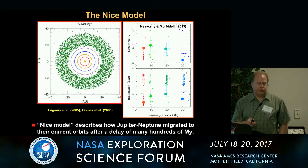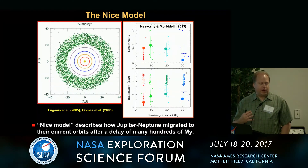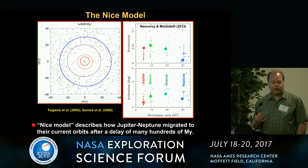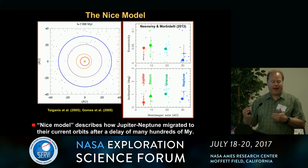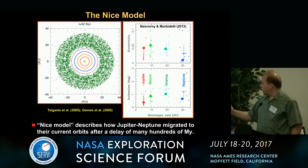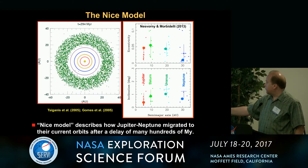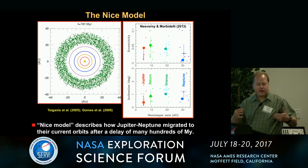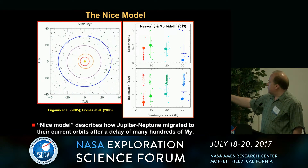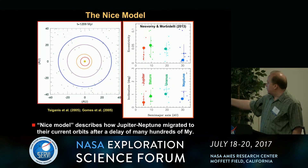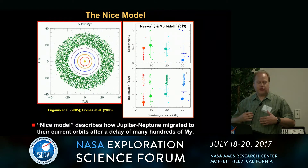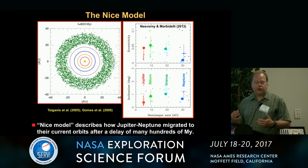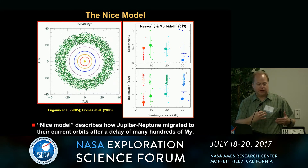Then a new model came along called the Nice Model. It describes a dynamical construct where the giant planets form in a different location than we see them today. Jupiter forms about the same place, but the rest of the giant planets form at about half the distance from the Sun they currently are, surrounded by a large disk of comets of maybe about 20 Earth masses. This system eventually goes unstable. One reason we like this model is that when the planets stop migrating and deplete this disk, they do a pretty good job of reproducing the orbits of the giant planets in semi-major axis and inclination and eccentricity. At the moment, it's the best model we have to reproduce these orbits. The question is how far we can push this model until it breaks.